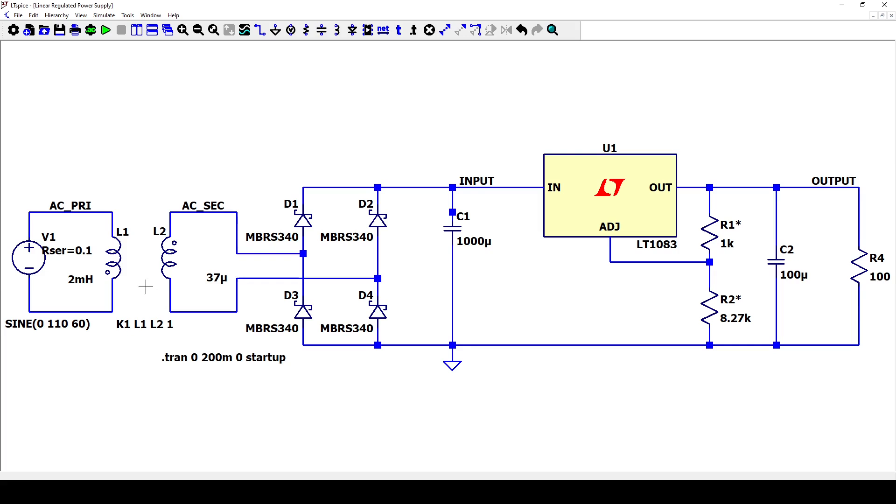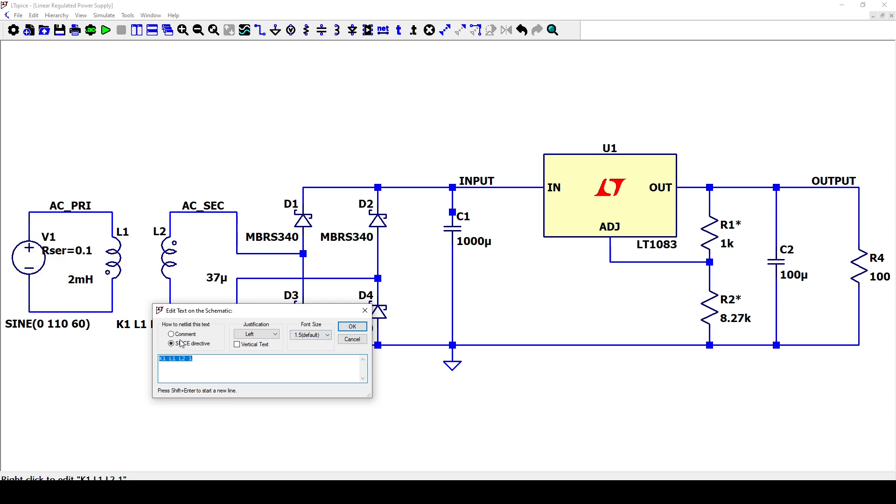For the transformer, we need to place two inductors for the primary and the secondary and make them work like a transformer by adding this statement using SPICE directive. The desired transformation ratio can be achieved by selecting the inductance of each of the two inductors.